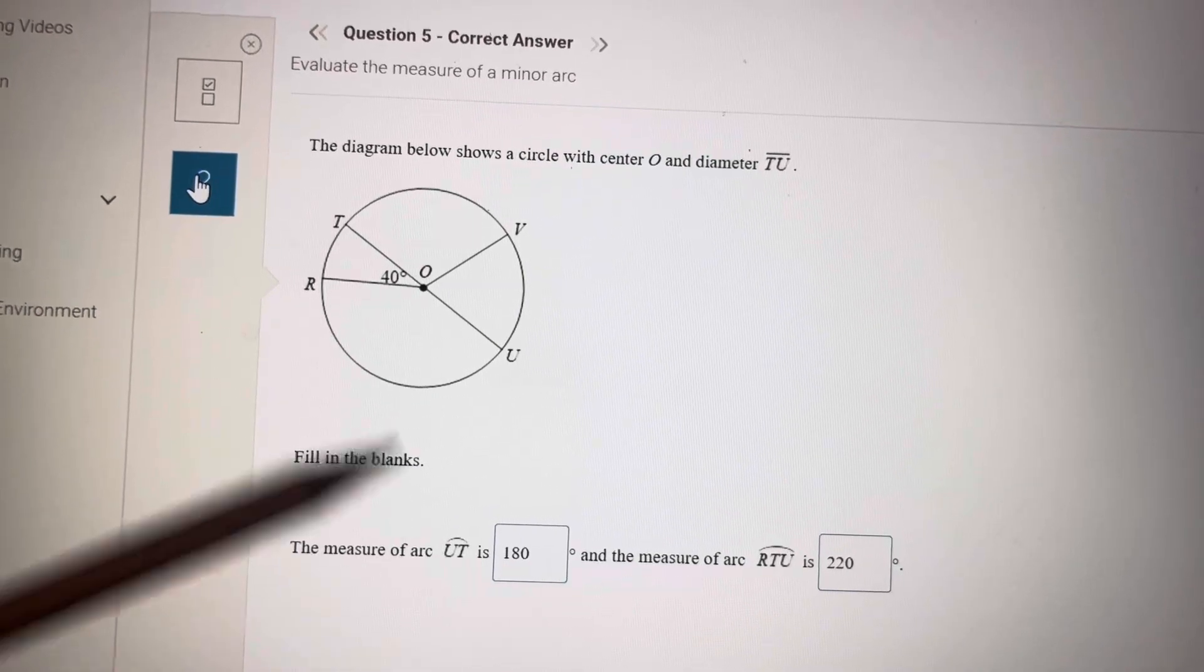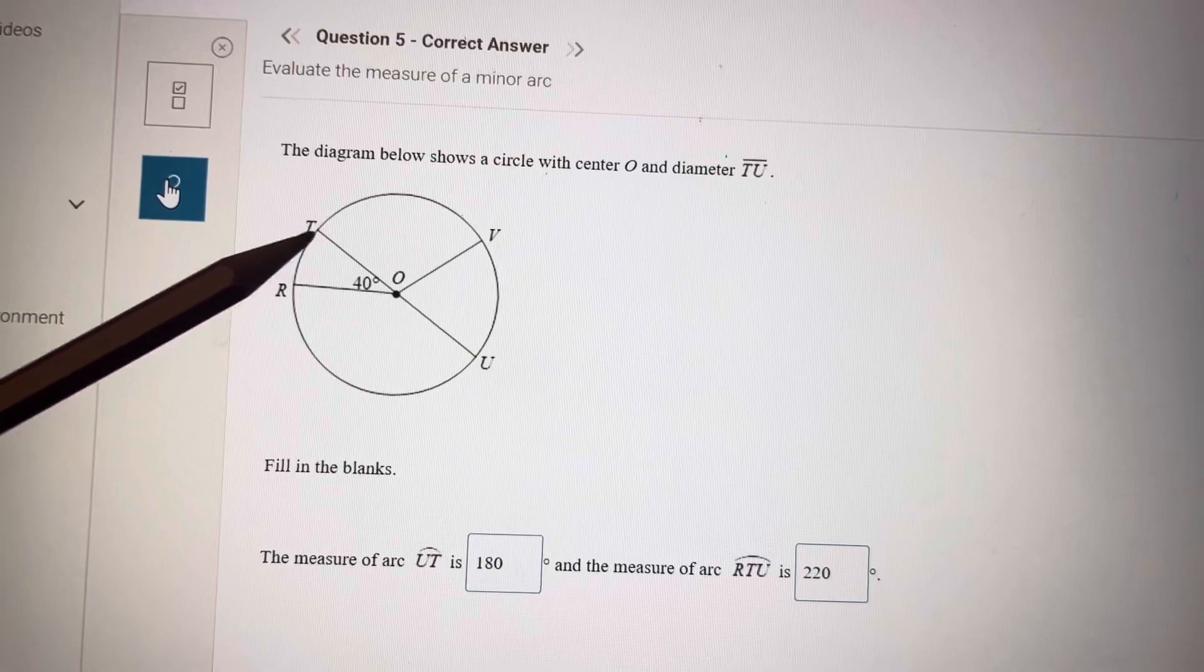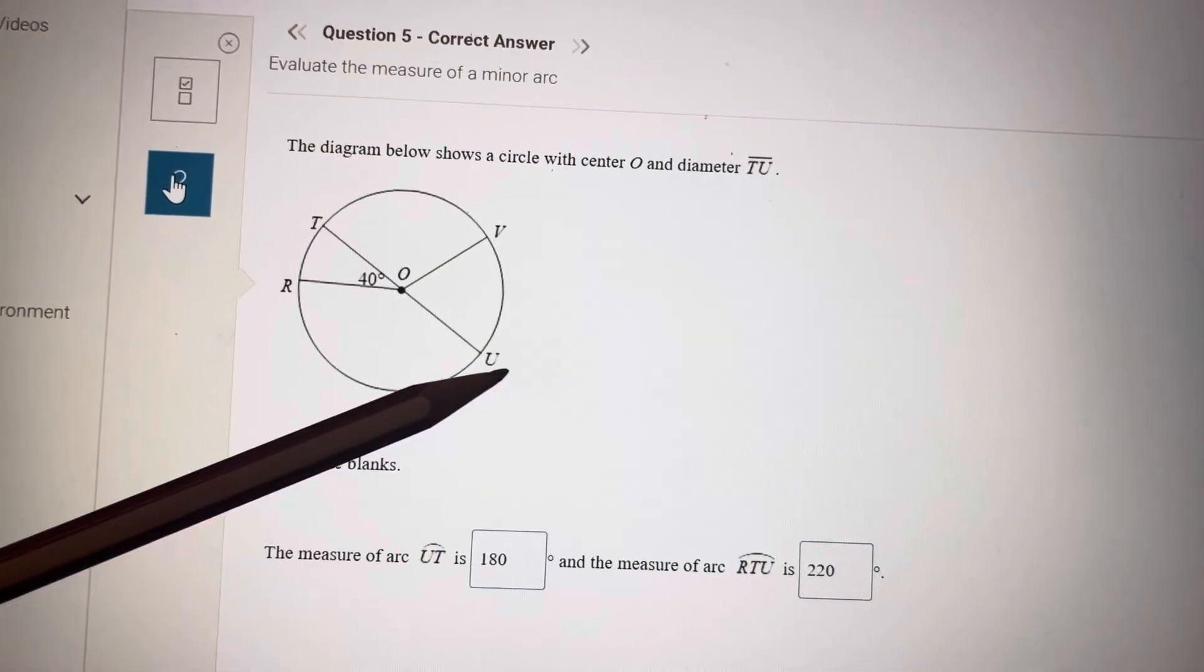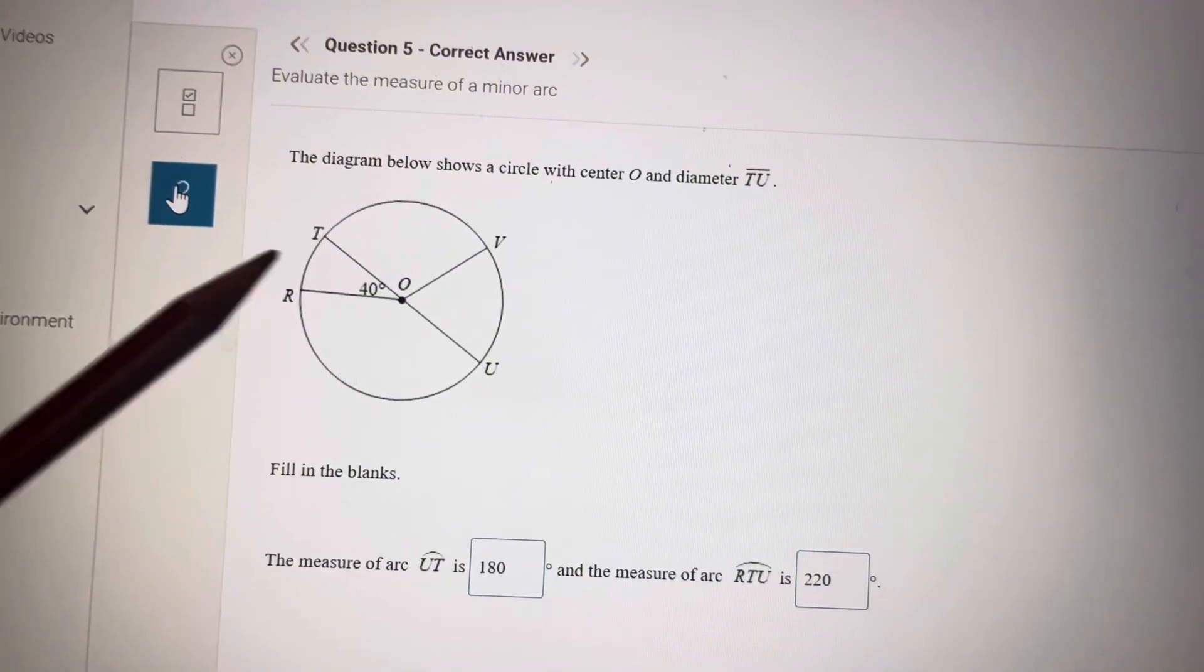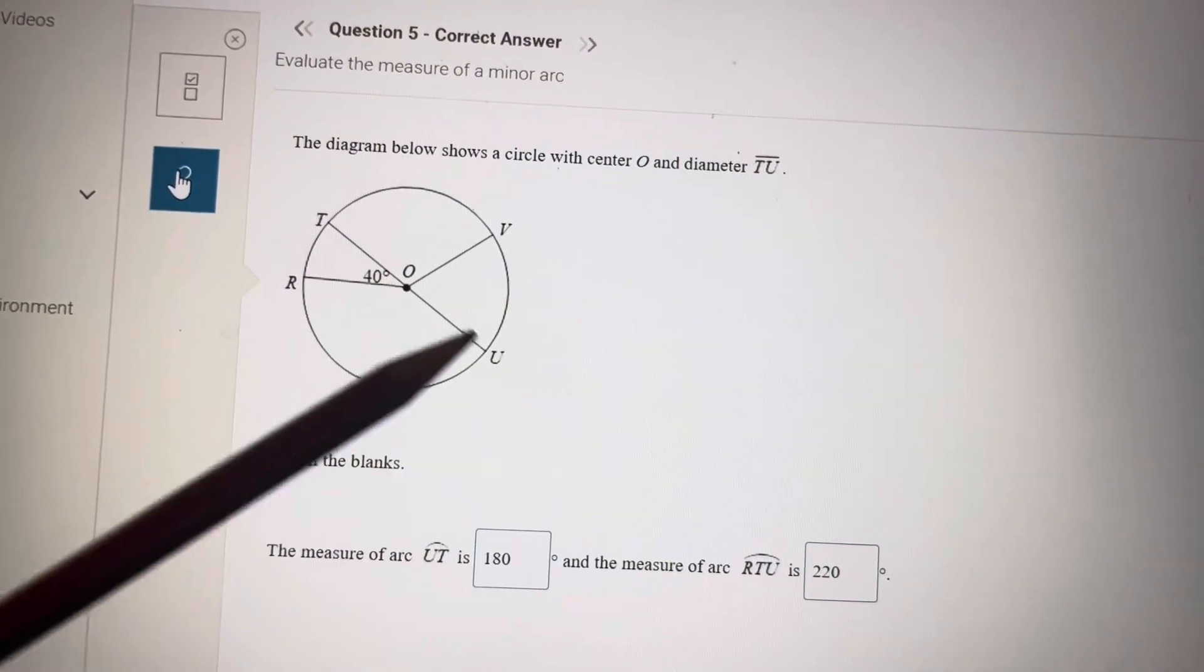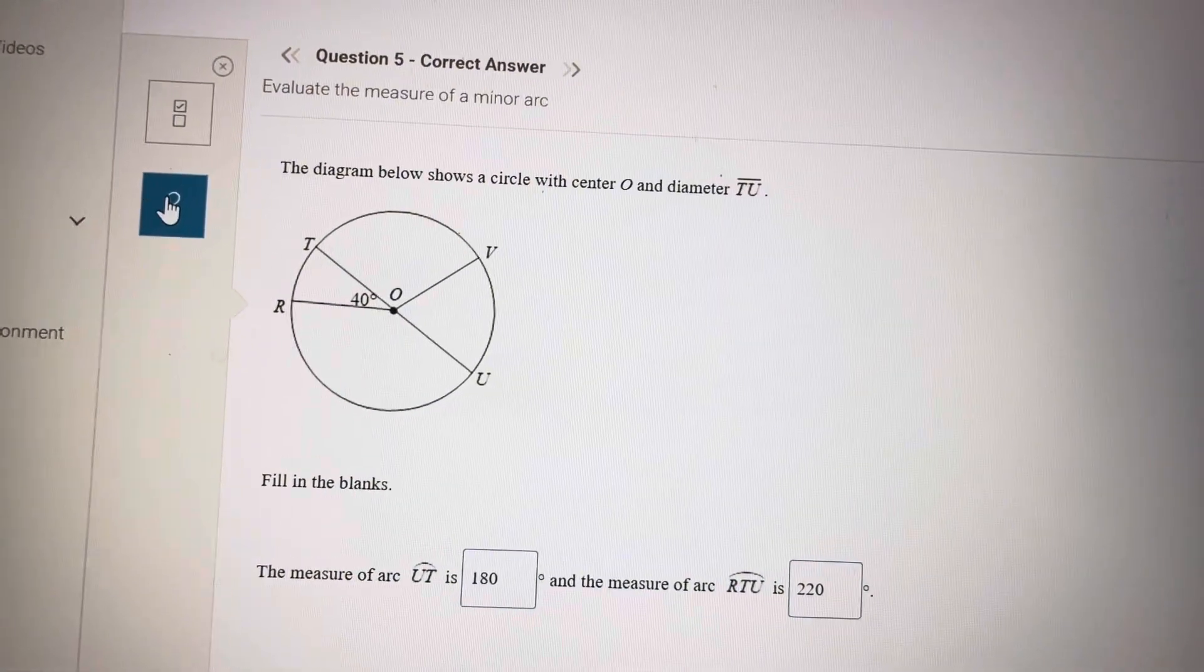In this circle, he wants UT. He already is giving you that UT is a diameter. So the arc UT is half of the circle. 360 divided by 2 is 180. RTU. So I have this 180 plus 40, so it will be 220.